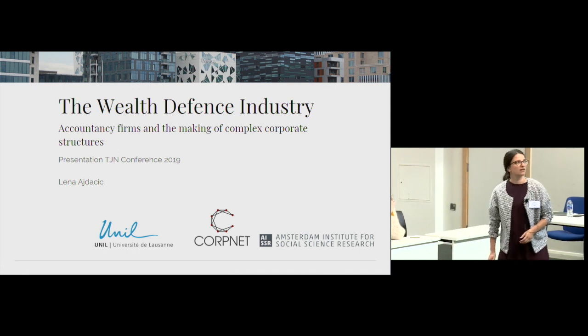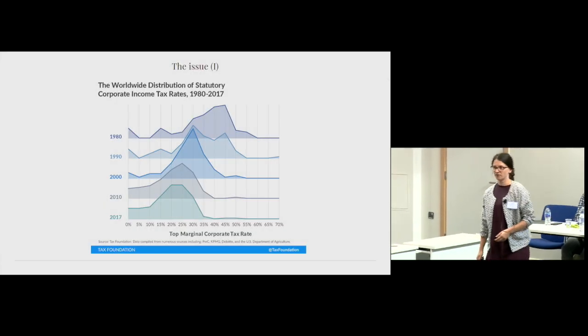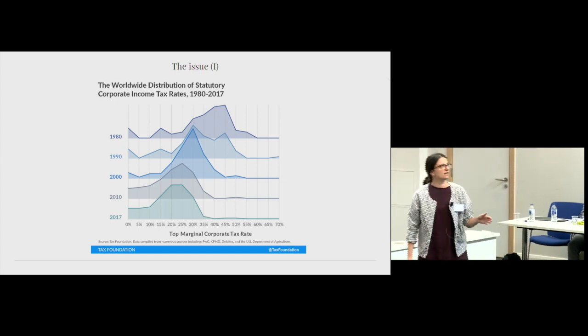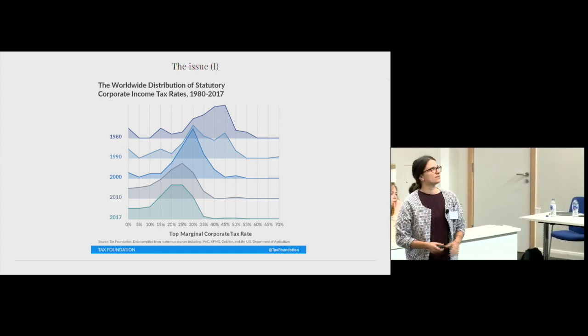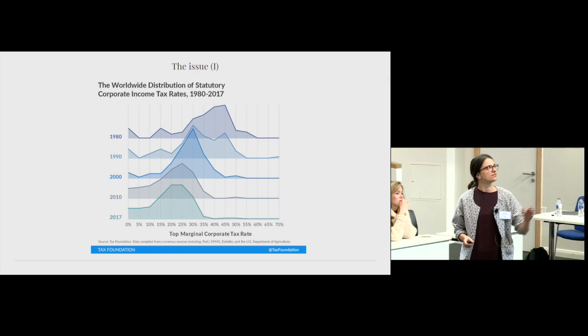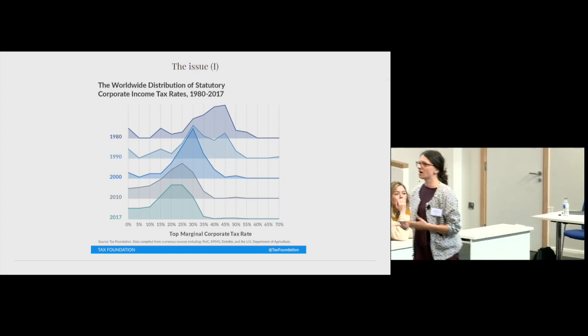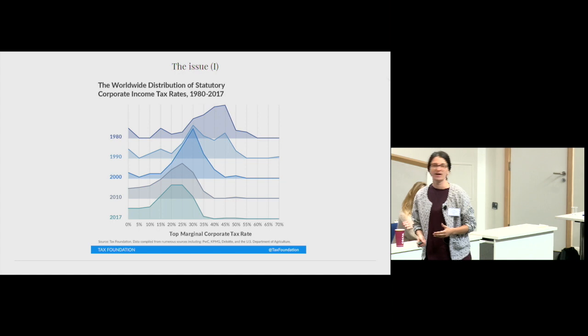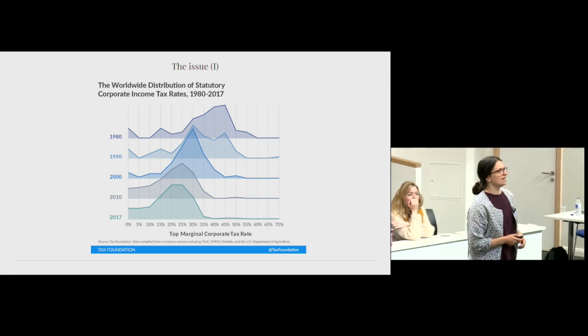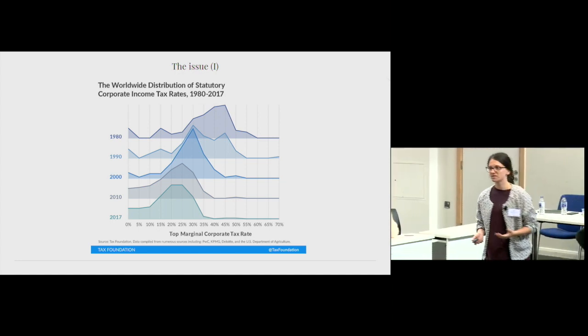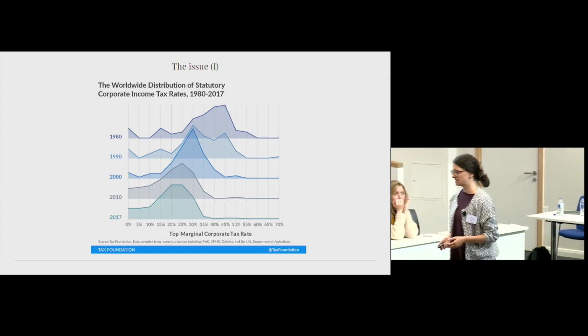To give you some background on how we came up with that question, what you see here is the top marginal corporate tax rates over all countries. In 1980, on average, companies were taxed at the rate of 45%, whereas today that rate drops and it's at 20 to 25%.